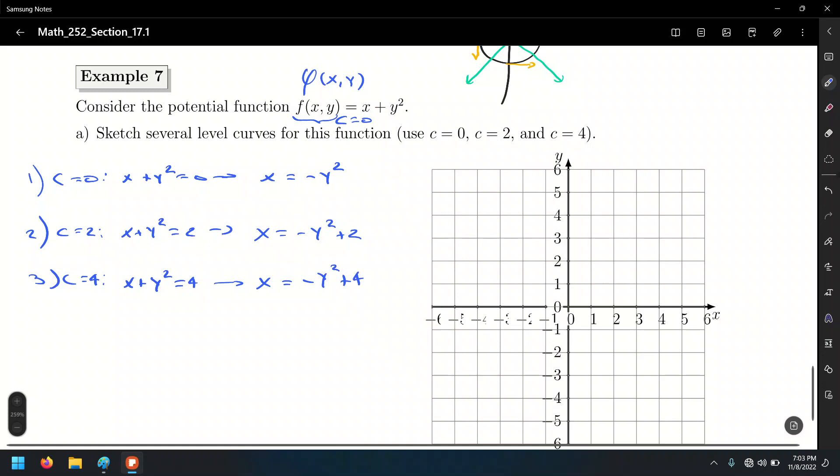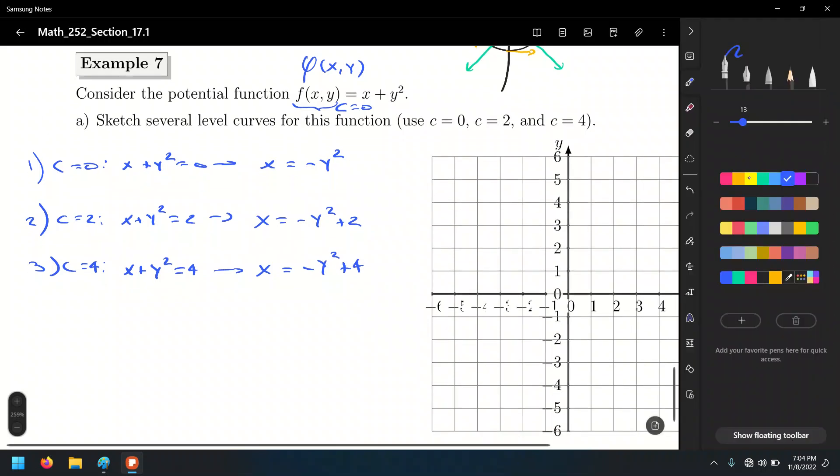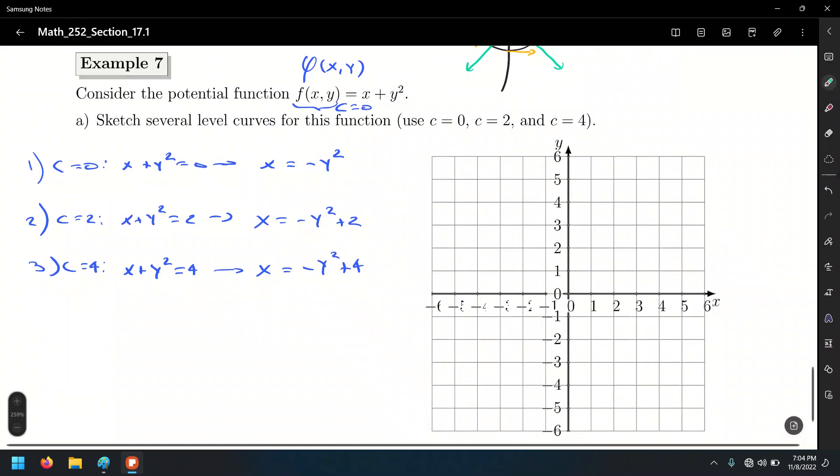So let's sketch these curves. x equals negative y squared. What's the graph of that one? It's a horizontal parabola. Horizontal parabolas either open to the right or to the left. In this case, the negative sign indicates that it will open to the left. And let me use some key points right here. 4, okay, so that's 4, and 4. So that's going to give us this parabola right here.